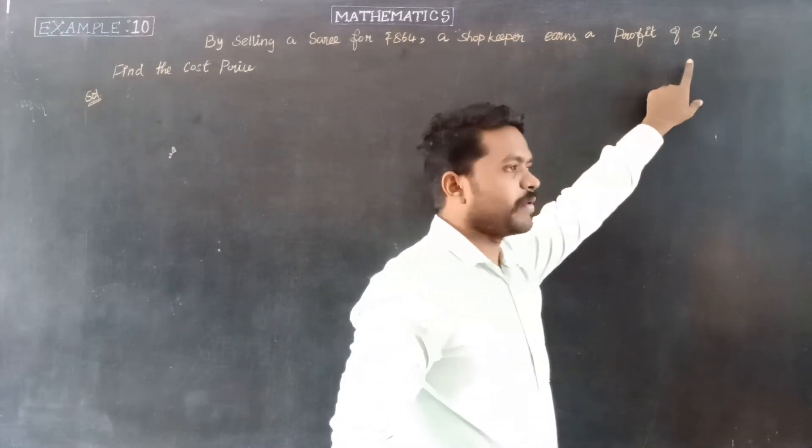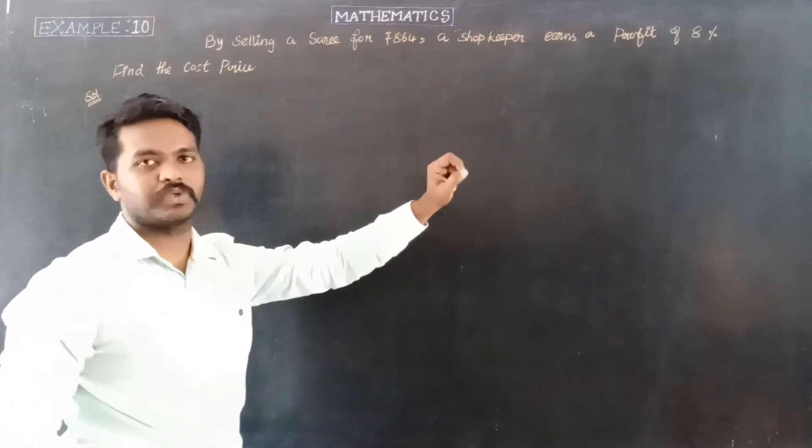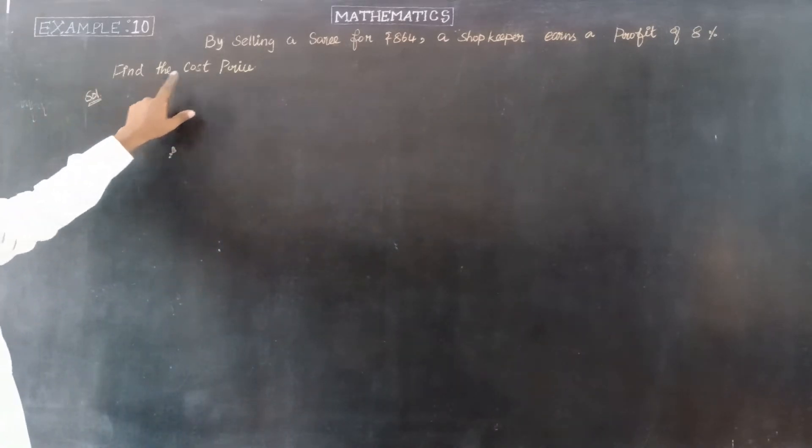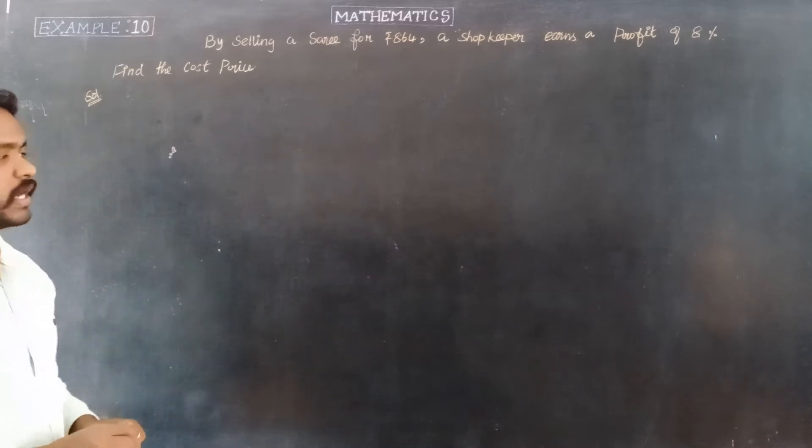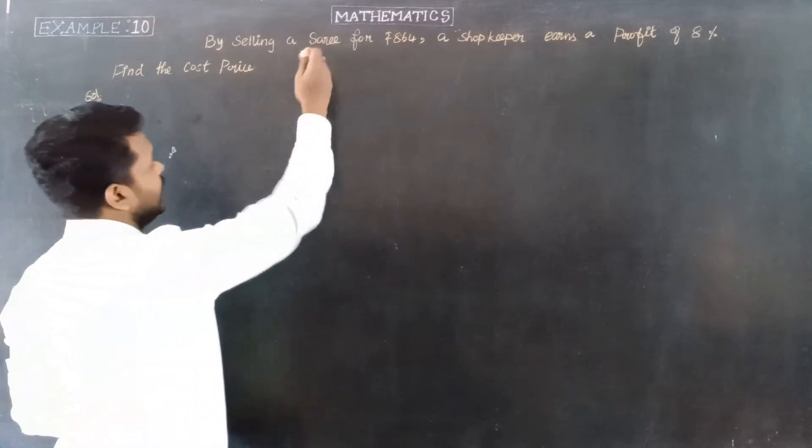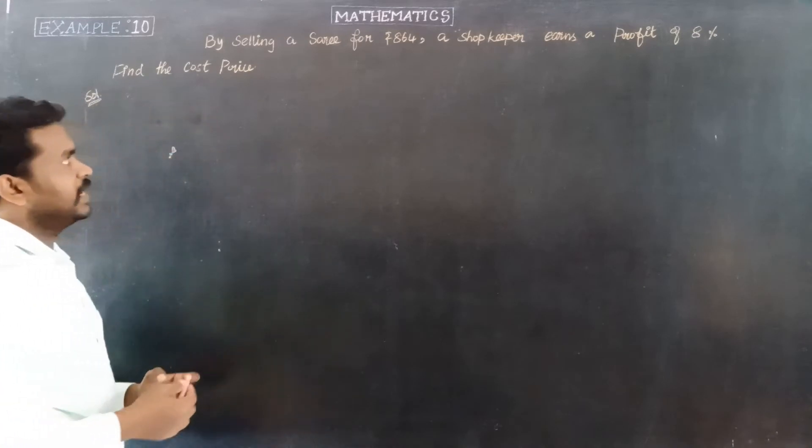The shopkeeper earns a profit of 8%, so profit percentage is 8%. We need to find the cost price. The selling price is given.